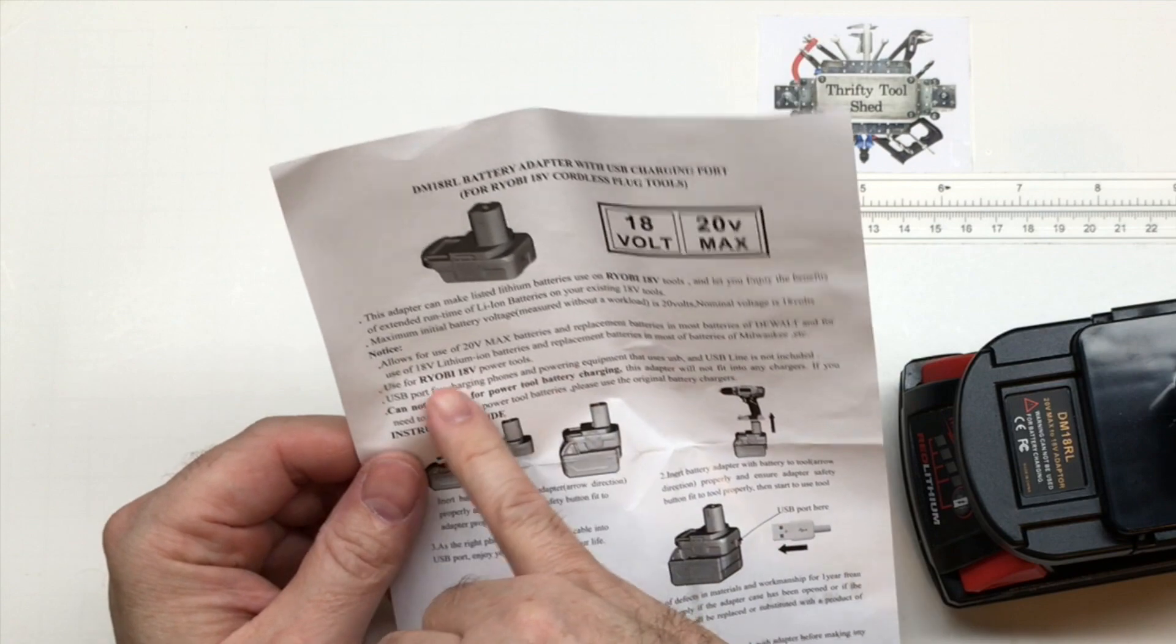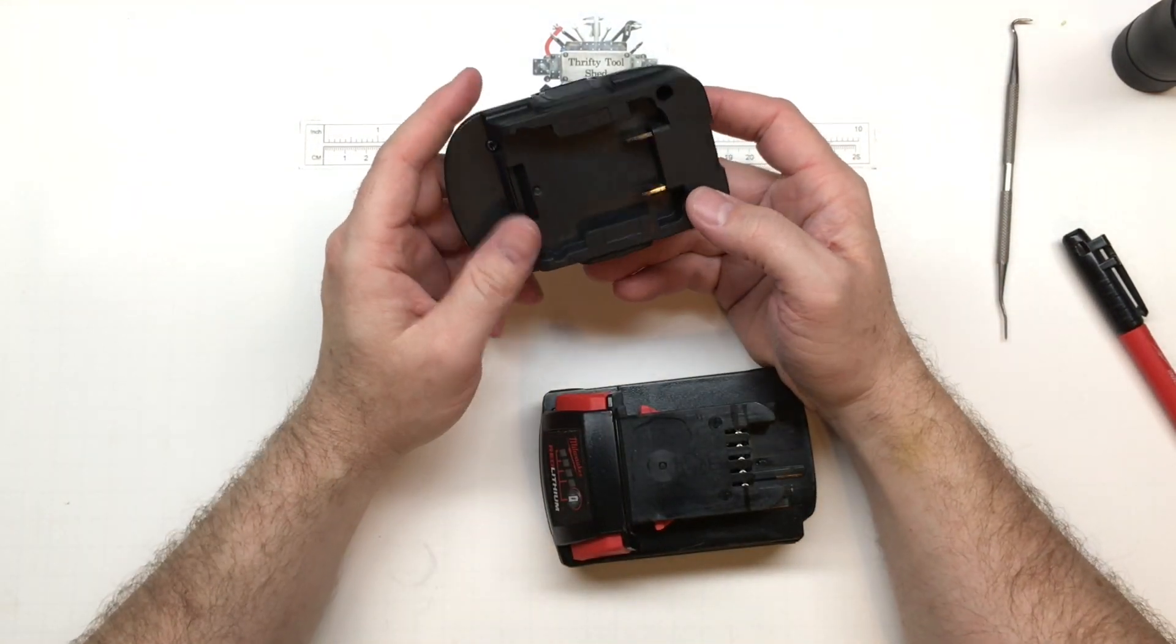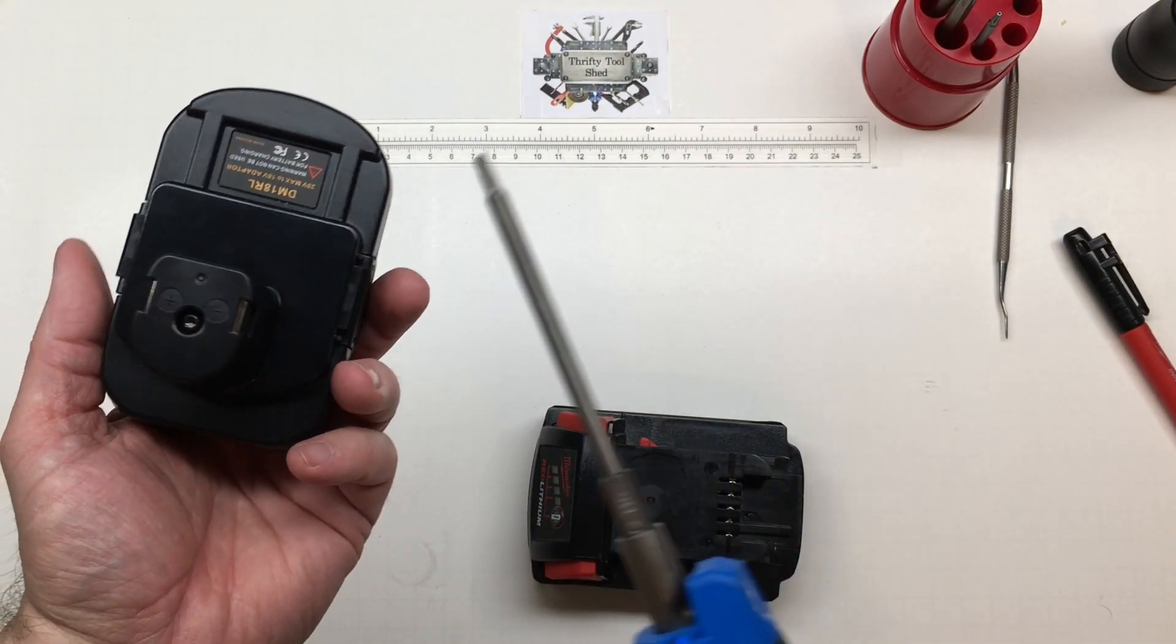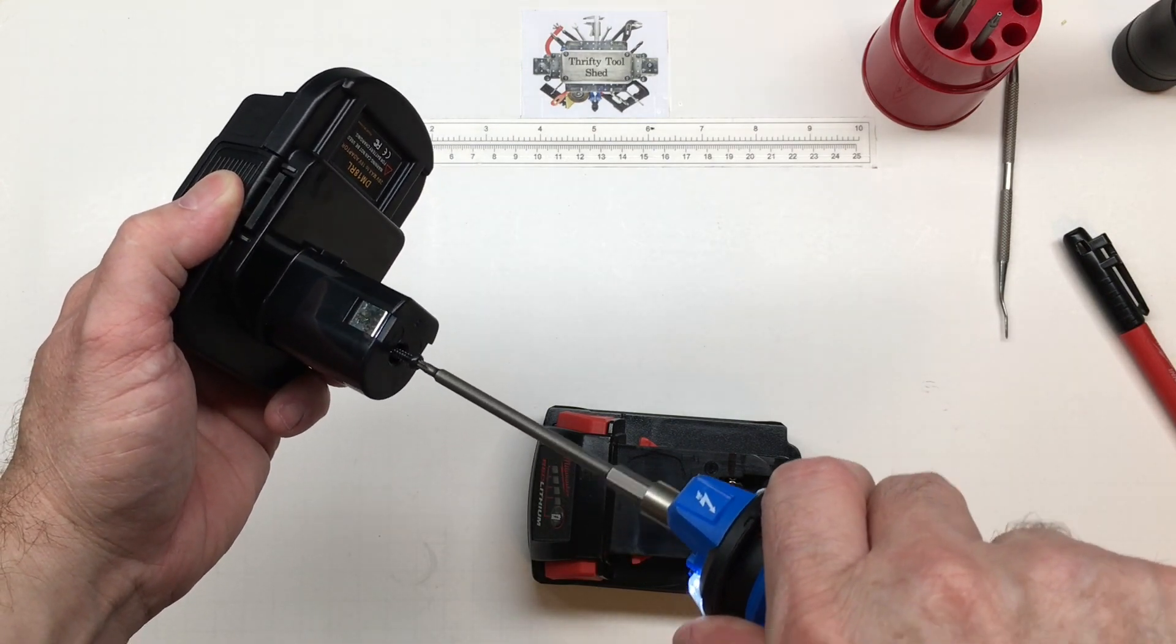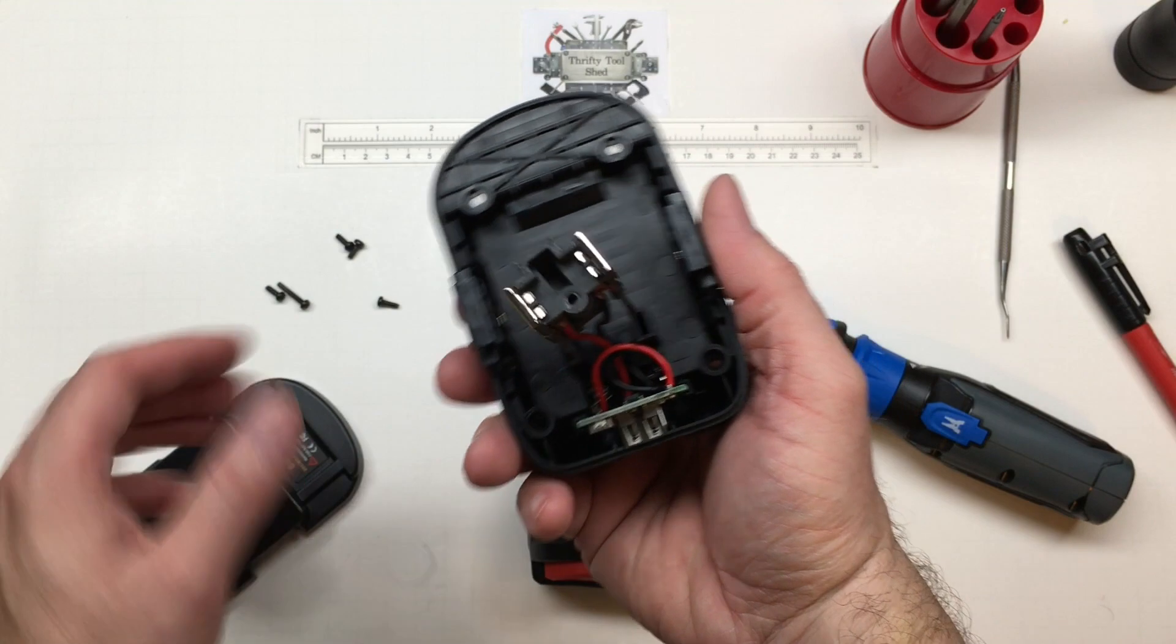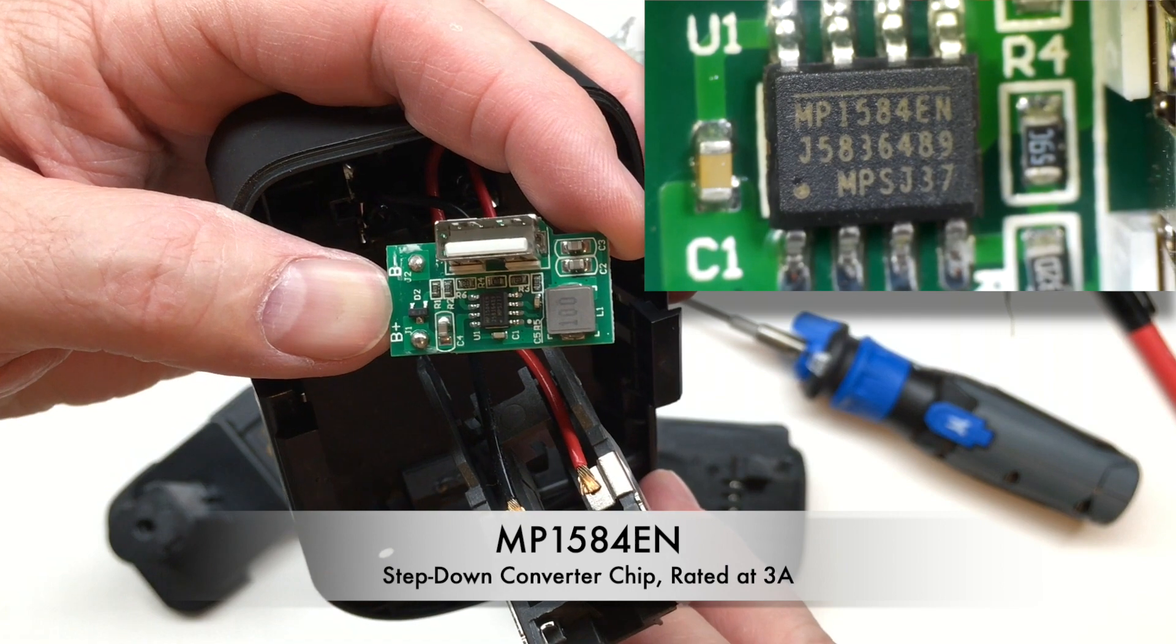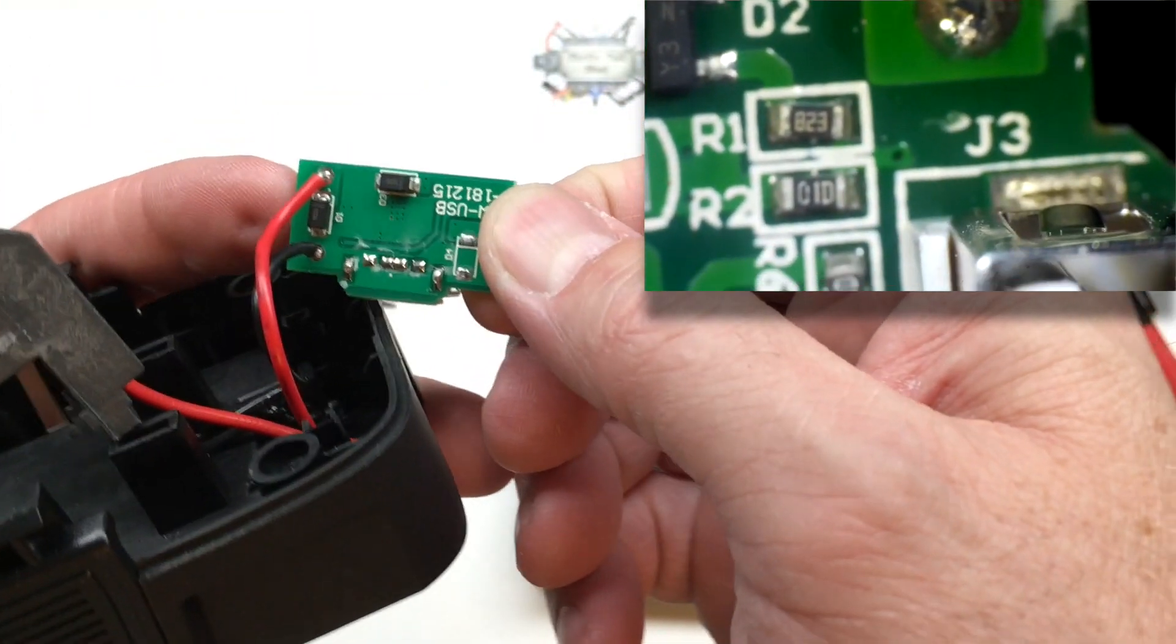It says most batteries are DeWalt and replacement batteries for most batteries are Milwaukee. But I might actually get a DeWalt pack and see before I modify it and test it that way too, so we'll know if it's any better with a DeWalt pack. It's a Torx bit T10. We got one on top and four on the bottom.